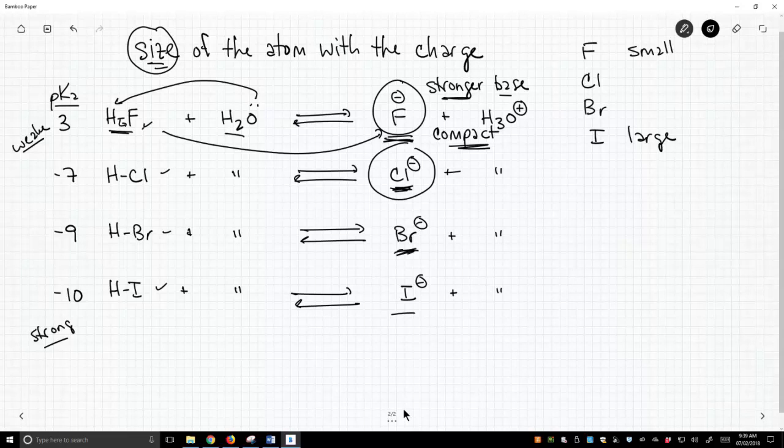Bromide continues the trend. It's even bigger as we move down the periodic table. And then iodide is the biggest of all. Therefore, its charge is the most diffuse. It's the most stable. Most stable as a base. So this is the weakest base that we've shown on the page.